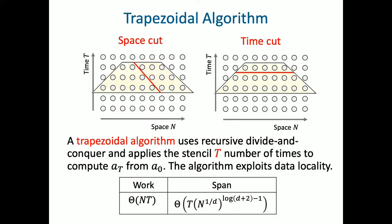And then we have more advanced versions with the same sort of concept of the tiled looping algorithm. Trapezoidal algorithm exploits space and time cuts to optimize the data locality and parallelism. Again, it has better parallel running time, but still the work boundary remains the same.